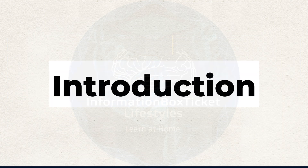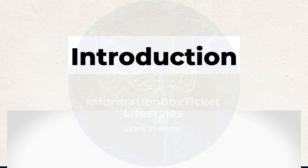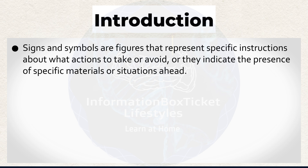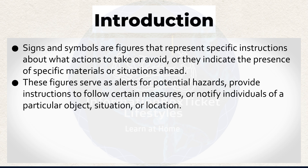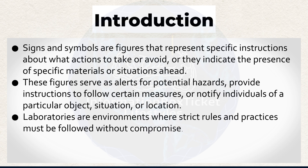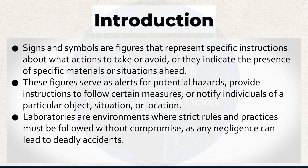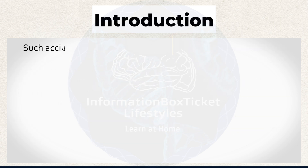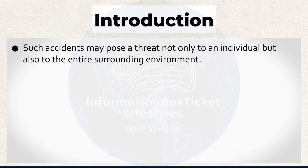Introduction to laboratory safety signs. Signs and symbols are figures that represent specific instructions about what actions to take or avoid, or they indicate the presence of specific materials or situations ahead. These figures serve as alerts for potential hazards, provide instructions to follow certain measures, or notify individuals of a particular object, situation, or location. Laboratories are environments where strict rules and practices must be followed without compromise, as any negligence can lead to deadly accidents. Such accidents may pose a threat not only to an individual, but also to the entire surrounding environment.